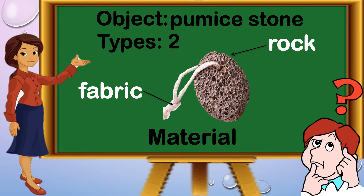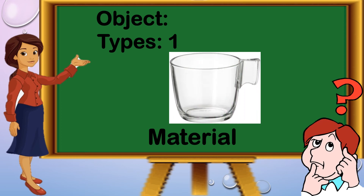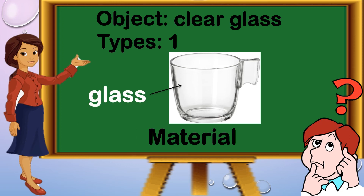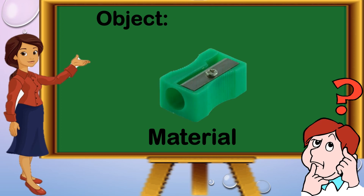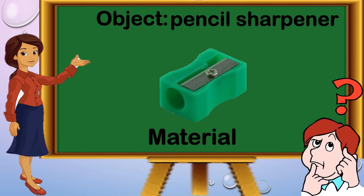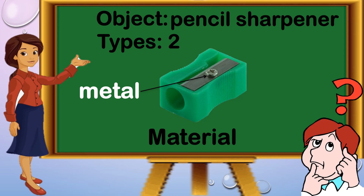It is used to clean our body. We also have a clear glass. It is made up of one type of material: glass. Another object is pencil sharpener. It is made up of two types of materials. First, we have metal, and this part is made up of plastic — metal and plastic.